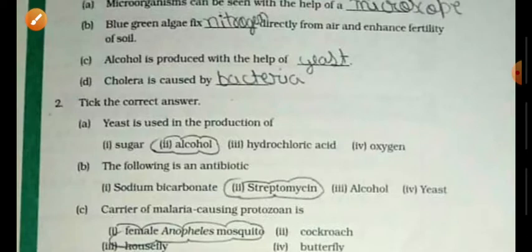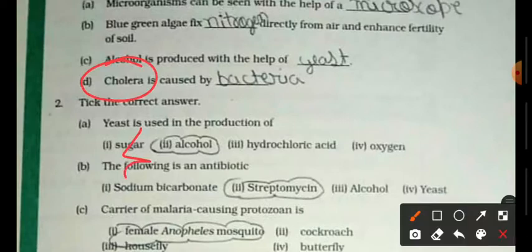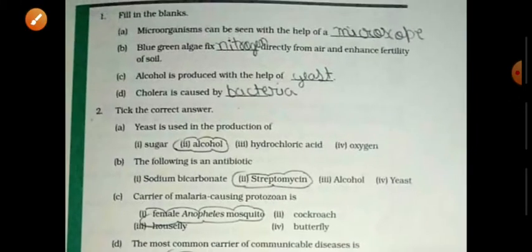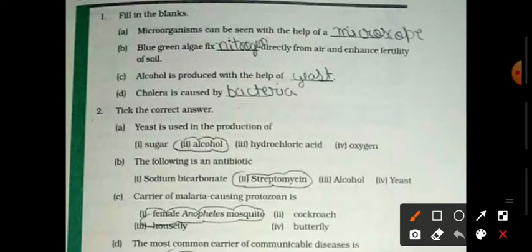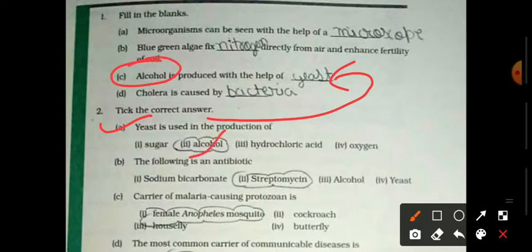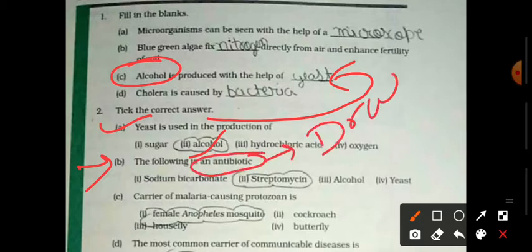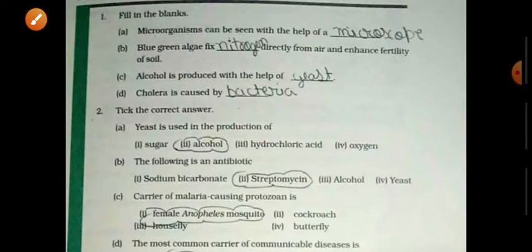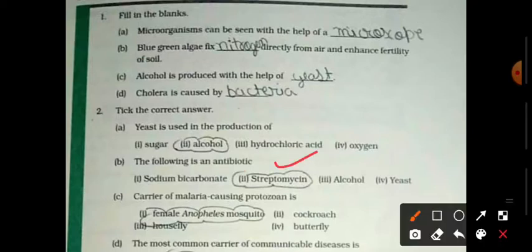Next is cholera. Cholera is caused due to bacteria. Next, take the correct word. Yeast is used in the production of alcohol. The following is an antibiotic. Antibiotics are drugs or medicines which kill bacteria. For example, streptomycin.